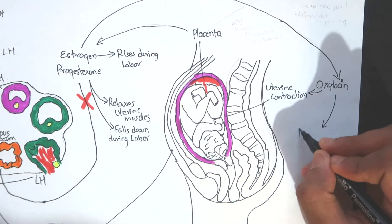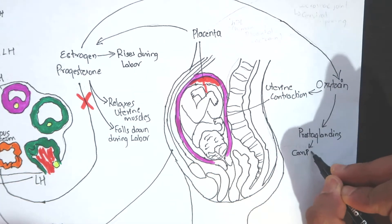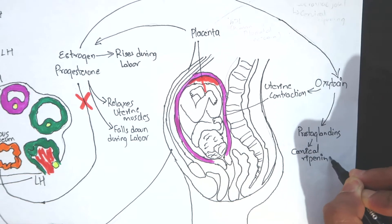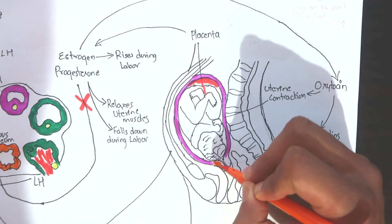Oxytocin with the help of high levels of estrogen causes the release of prostaglandins which may play a role in ripening of the cervix, that is softening of the cervix to allow easy passage of the fetus.